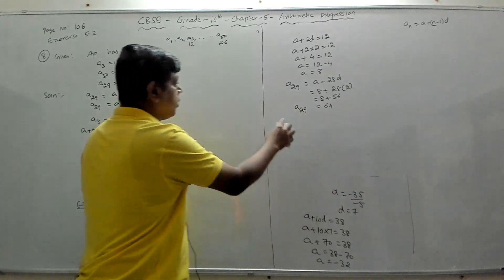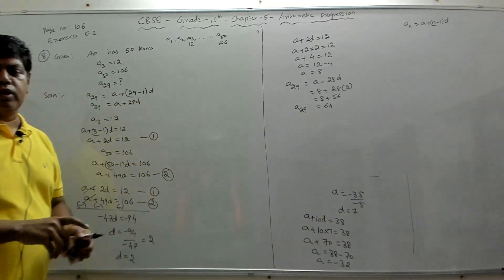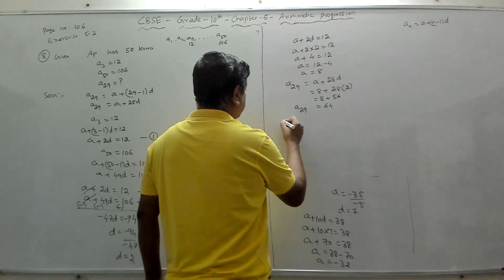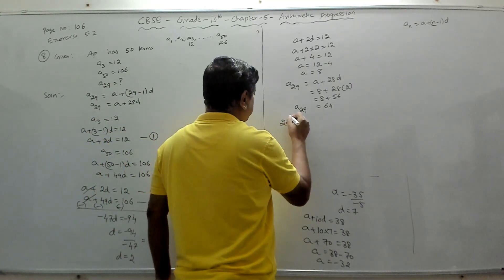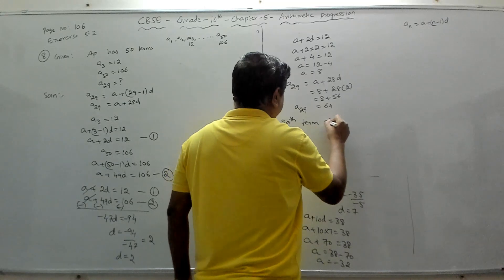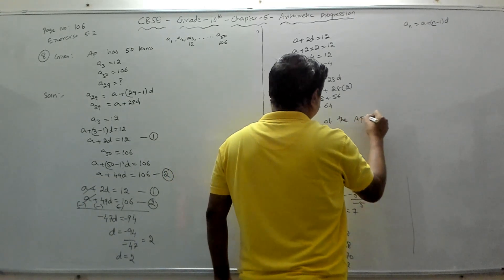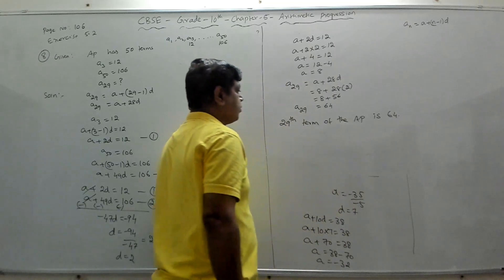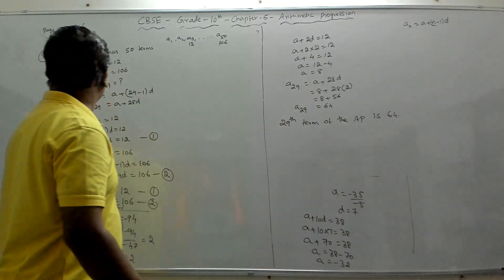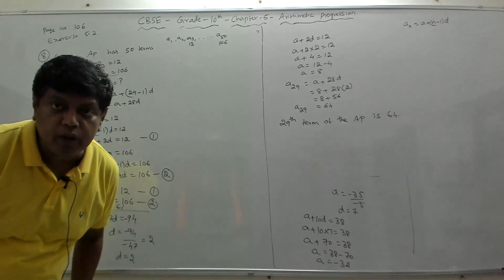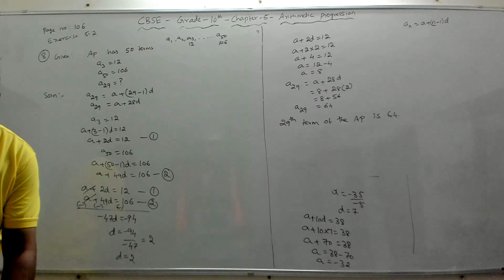The 29th term of the AP is 64. This completes problem 8. Now let's go to problem 9.